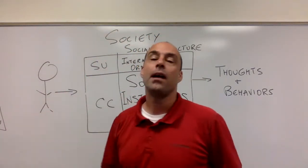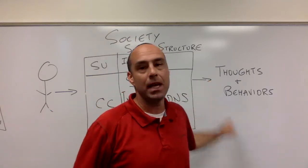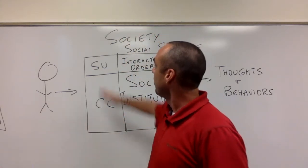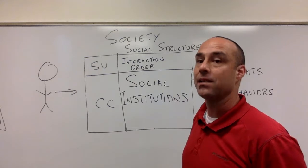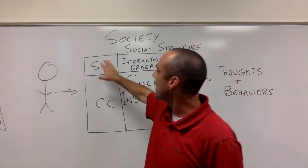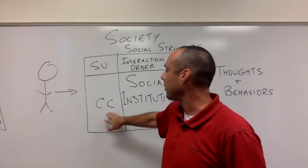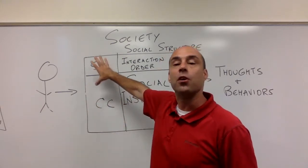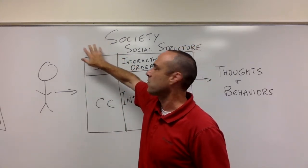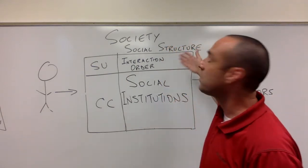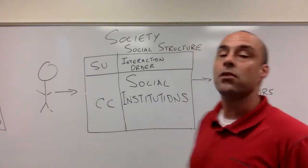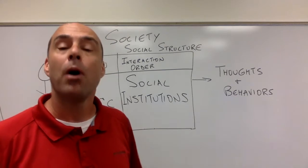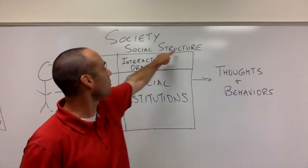It takes human beings and turns them into patterned thoughts and behaviors. Where we left off last time was dealing with the symbolic universe — all the things that hold meaning — and the collective consciousness, the beliefs that society has. Those two things together add up to culture, which is responsible for our thoughts. But we also are turned into behaviors, and the part of the machine that turns us into behaviors is called the social structure.